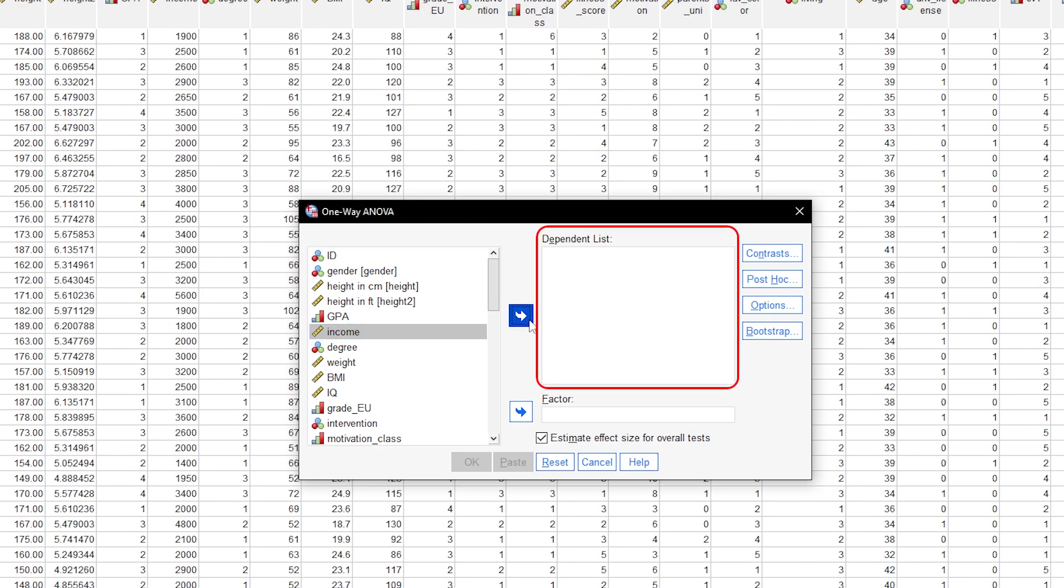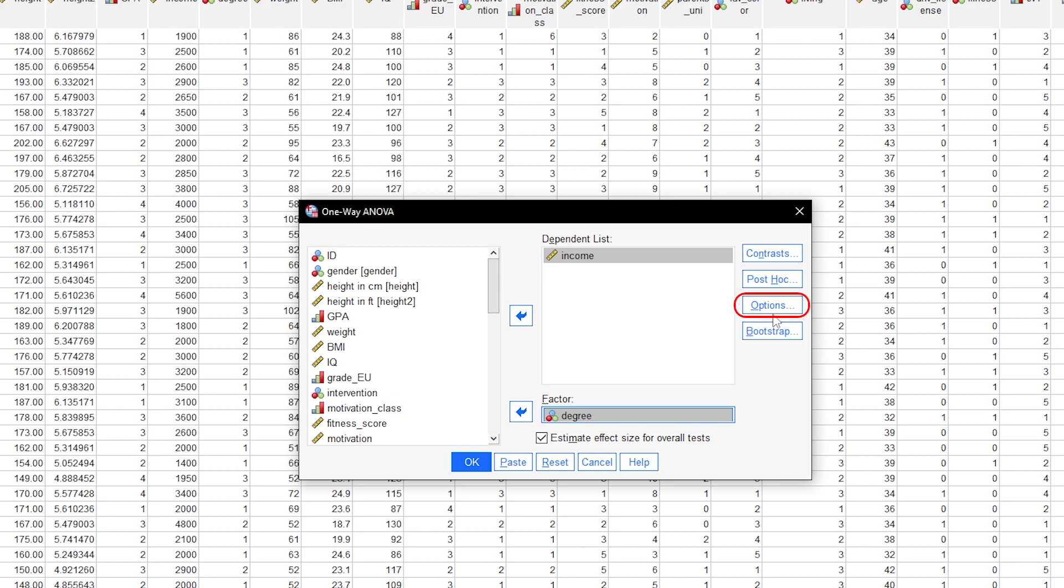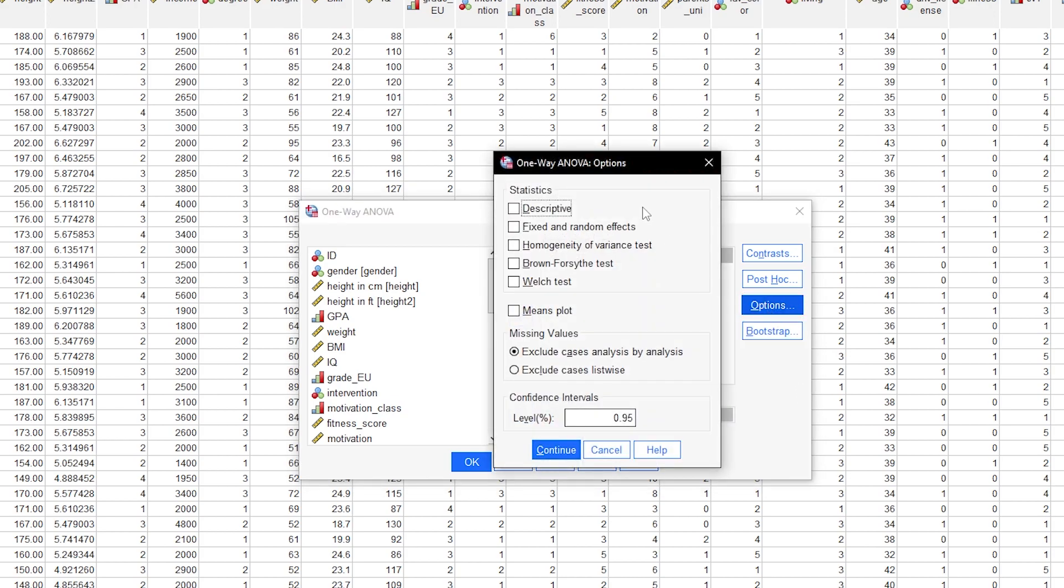Put your test variable into the dependent list box and your group variable into the factor box. Then, go to options and select the following: descriptive statistics and Welch test. The latter is, as I mentioned, correcting for possible equal variance violations. To show you the power, or lack thereof, of the Levene's test, I will request homogeneity of variances test as well.